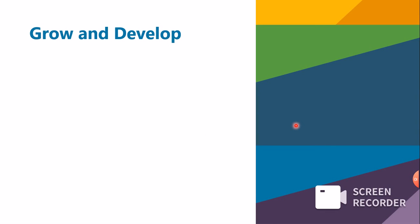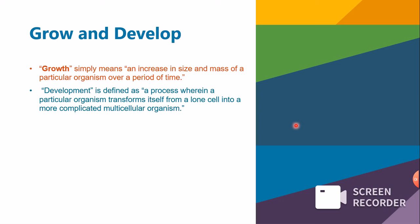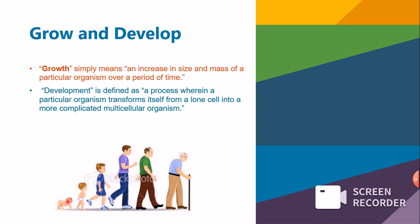Finally, growth and development. Growth means an increase in size and mass of a particular organism over a period of time — increasing in size and body mass. Development is defined as the process by which a particular organism transforms itself from a single cell into a more complicated, multi-cell organism. This is like the development of our cells, organs, and bodies — going from being a small baby into an adult.